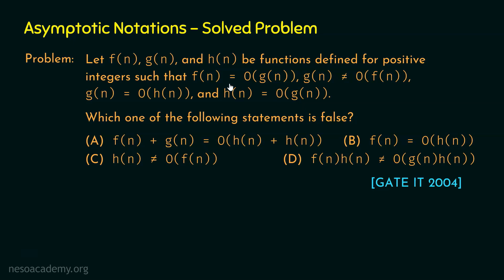Both conditions for g(n) and h(n) are satisfied. We have satisfied all four conditions and accordingly assumed f(n) = n, g(n) = n², and h(n) = n². Now we are ready to determine which of the four statements is false. Let's take one statement at a time.